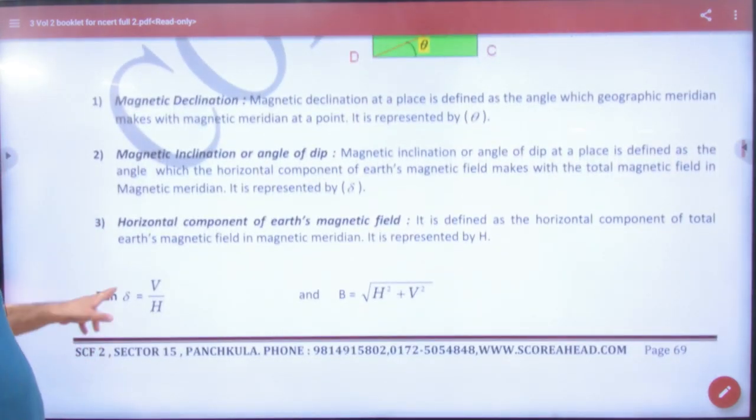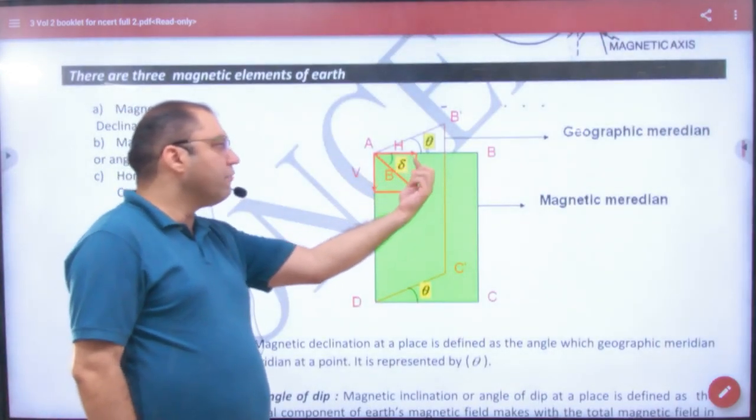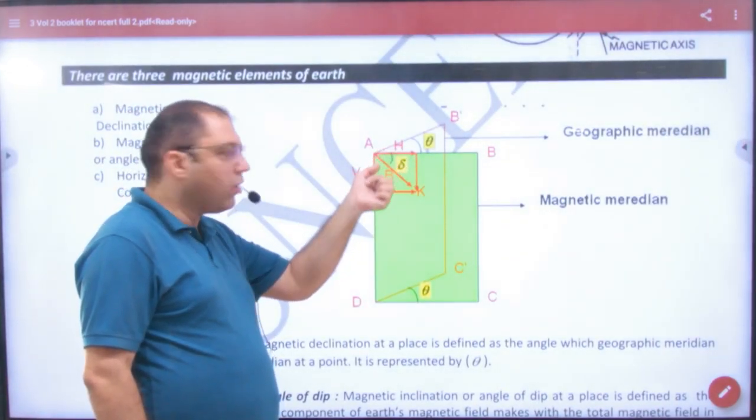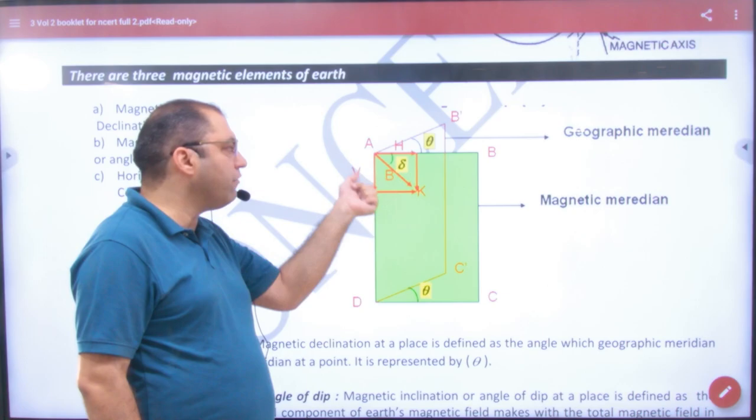As I told you, tan δ equals V divided by H, where V is the vertical component. The total B value is the square root of V² plus H². This is the answer.